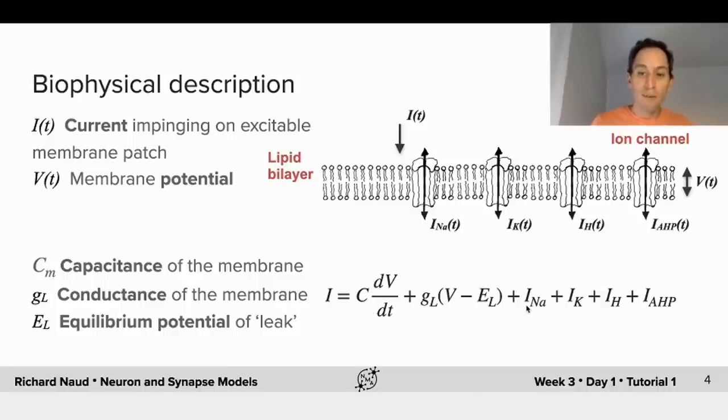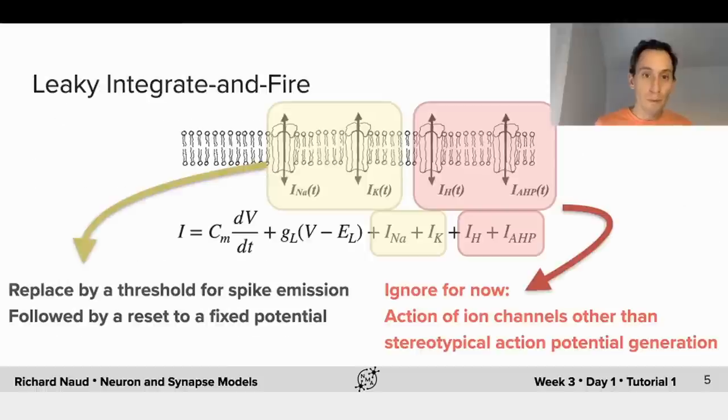And then, there's the current flowing through the different ion channels. Now, these different ion channels come in different types. I have here written the sodium ion channel and A, the potassium ion channel, K. Both of these are generating the action potential.